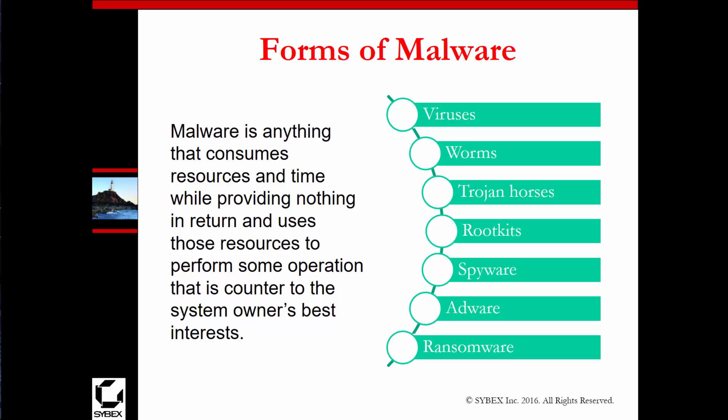Forms of malware can include things such as viruses, worms, Trojan horses, remote access Trojans, rootkits, spyware, adware, and ransomware. What gets really interesting is that all of these are also umbrella terms for their respective areas. You have to look at the intent, and that will help describe what items may fall into which category.